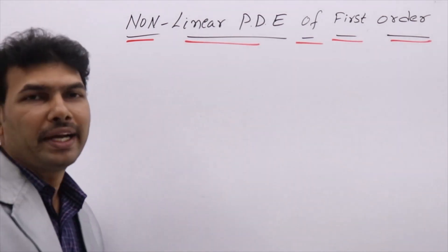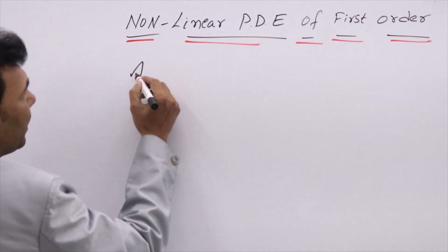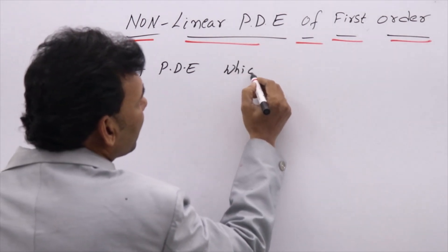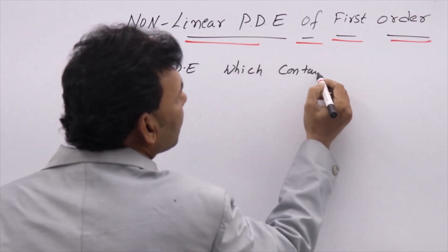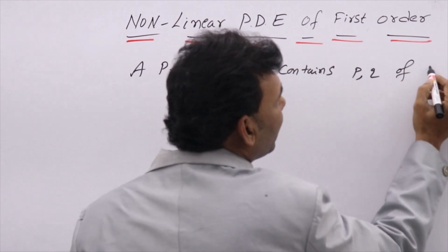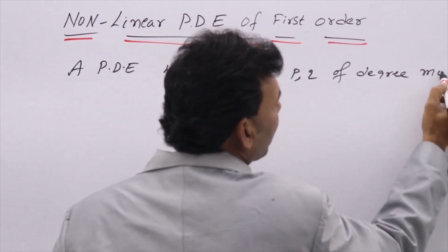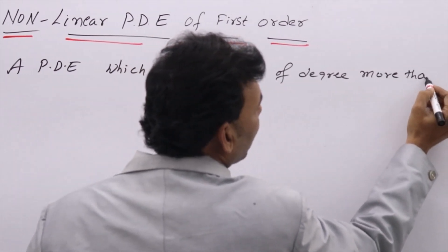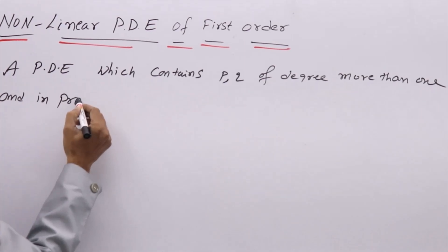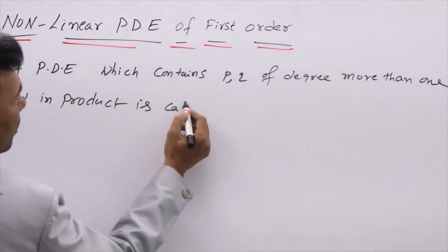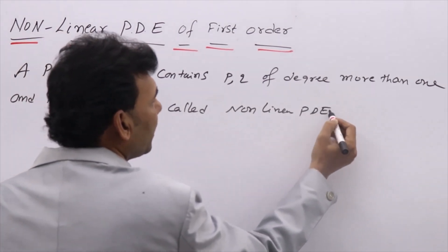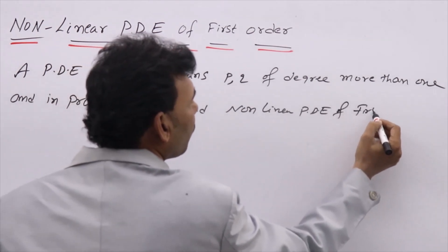Non-linear PDE of first order means a partial differential equation which contains p and q of degree more than one, or p and q in product — that is called a Non-linear PDE of first order.